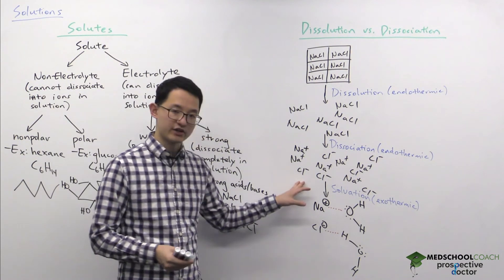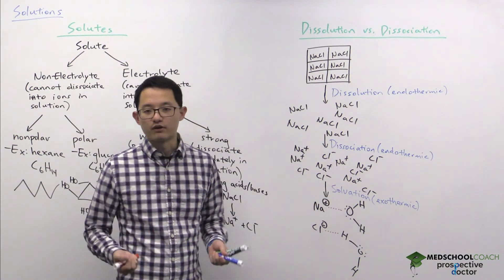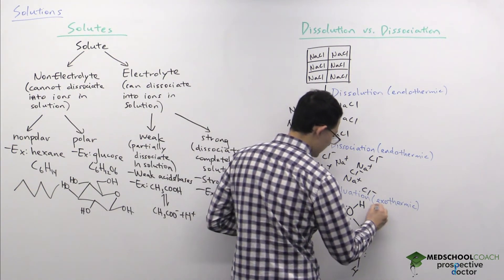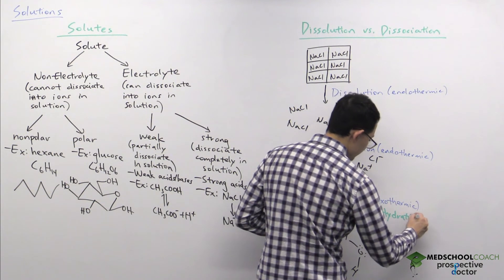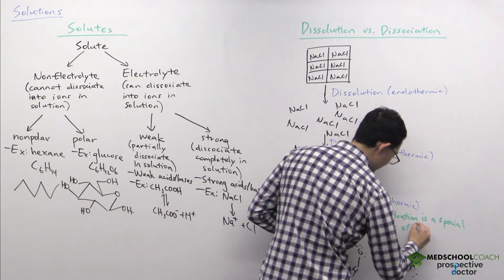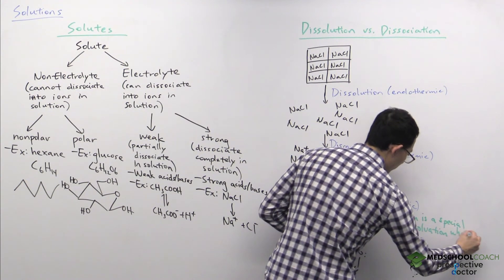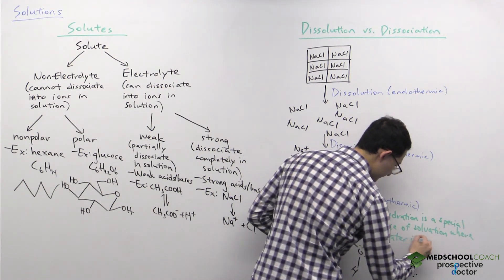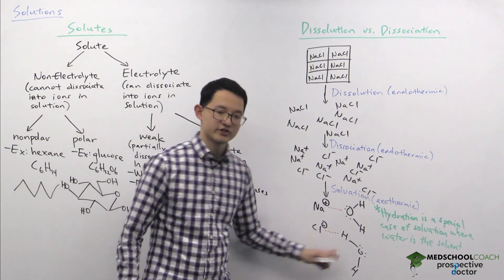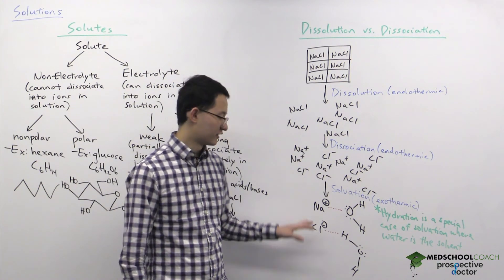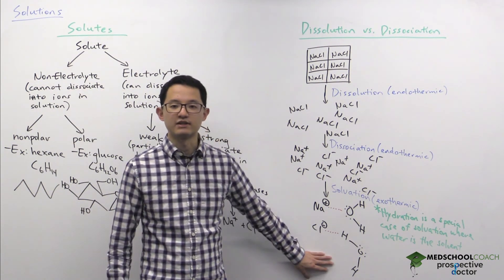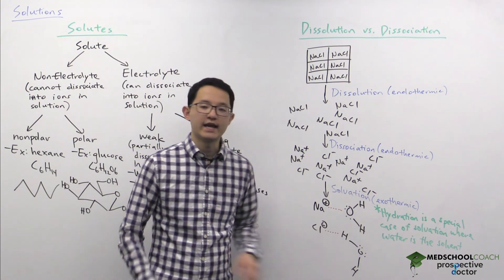Solvation is the process of solute particles forming favorable interactions with a solvent. There's also the term hydration, which is a special case of solvation where water is the solvent. So the sodium and chloride forming interactions with water can be called hydration. Generally for general chemistry, the solvent is water, so we can use the term hydration.